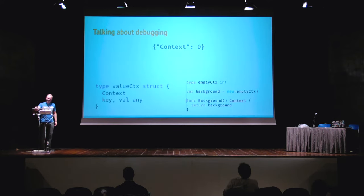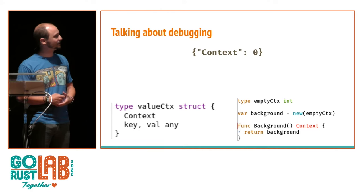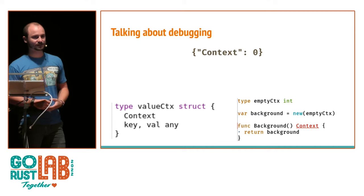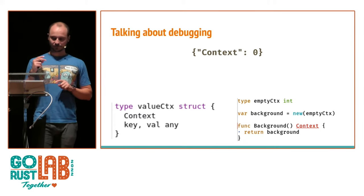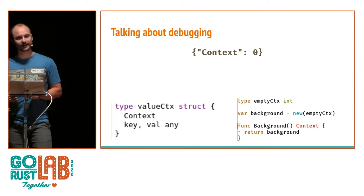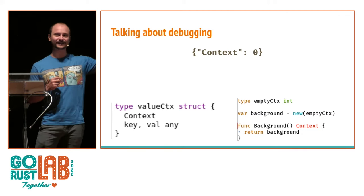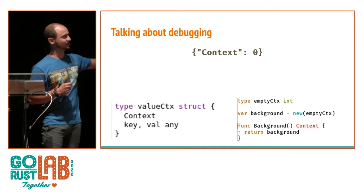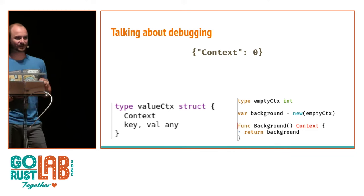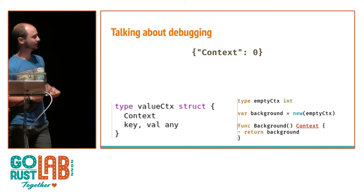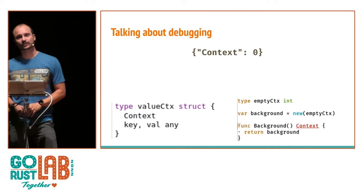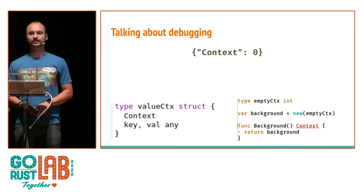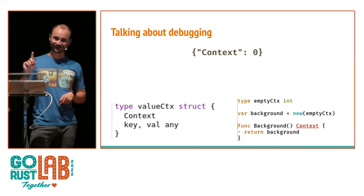I looked at the context value and realized it embeds a context. If you embed interfaces in your struct, I have two things to ask you: please don't. And if you really have to, can you leave a comment on the why? When you embed an interface inside your struct, you basically propagate behavior. In this case, the empty context inside it is just an integer — context.Background() equals zero, with some methods attached. But not JSON marshal.